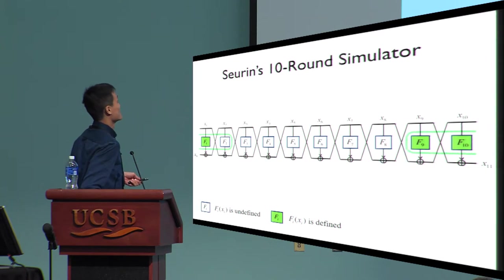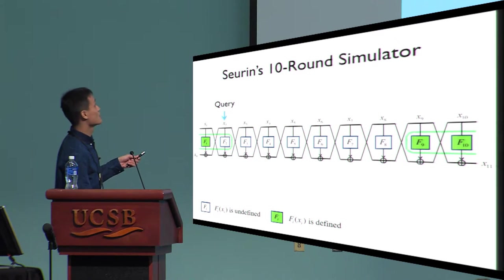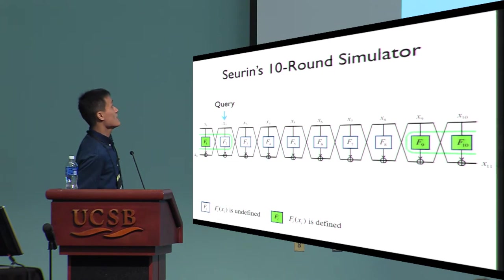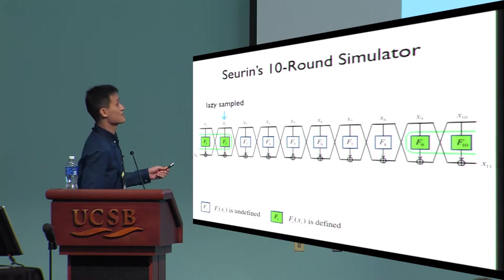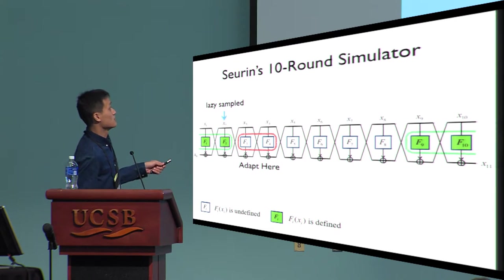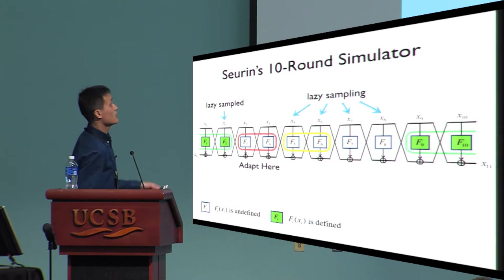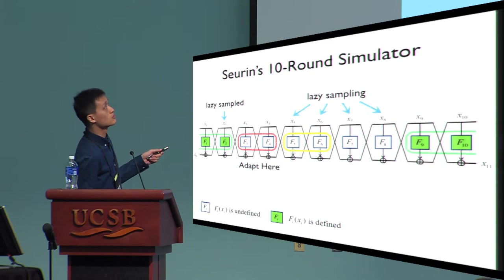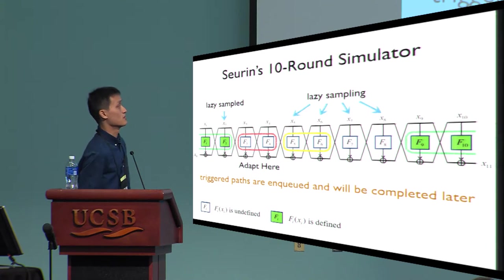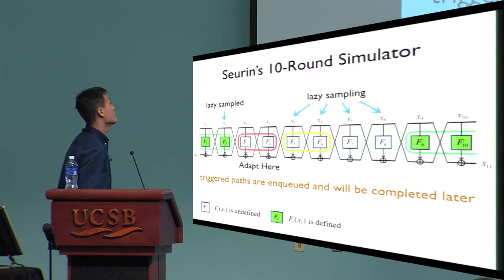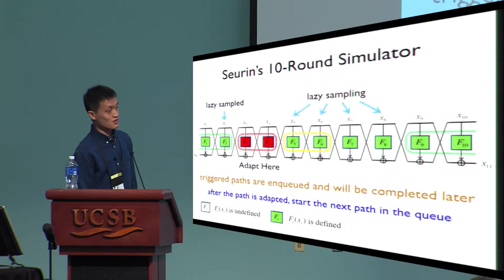To demonstrate with an example: a query is issued that triggers the outer detect zone of a path. First, the query is lazy-sampled, given a random value, and we adapt at the designated zone. We sample the other undefined queries in the path — so these four queries are lazy-sampled. Moreover, the queries to F_5 and F_6 are in the middle detect zone, so these two queries trigger more paths. These triggered paths are enqueued and dealt with later. After this path is completed, the simulator dequeues the next path and starts completing it.